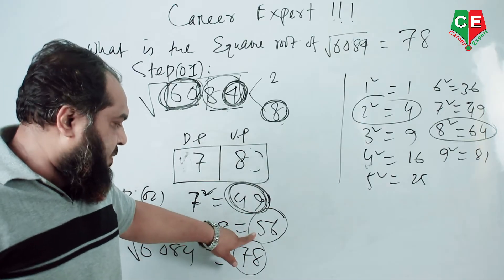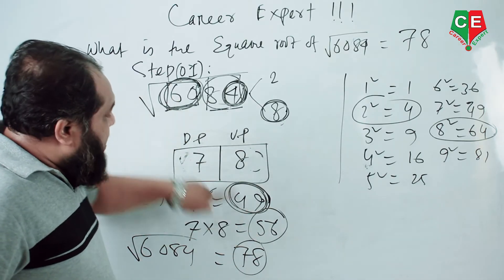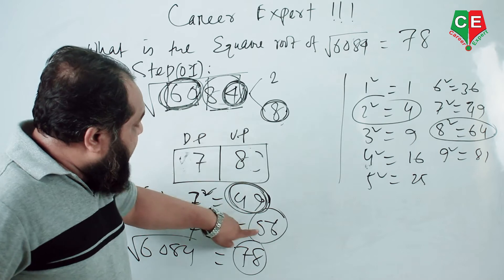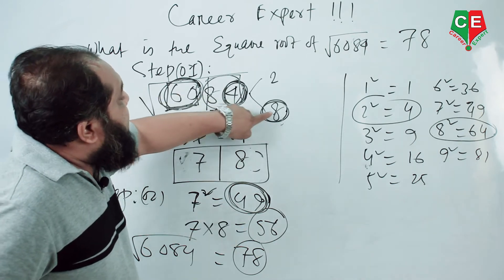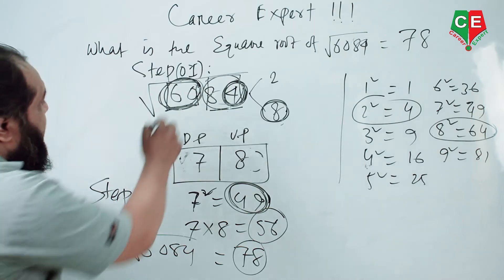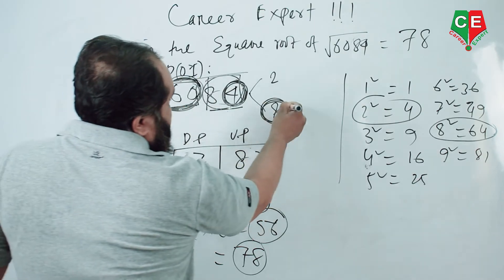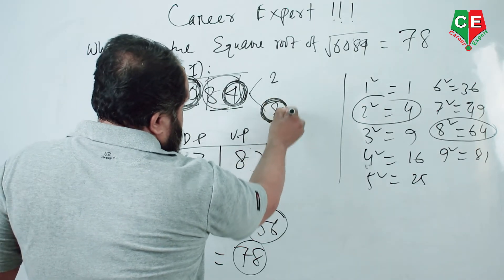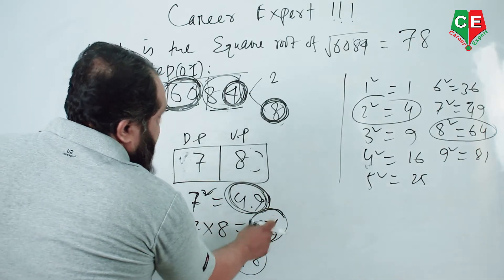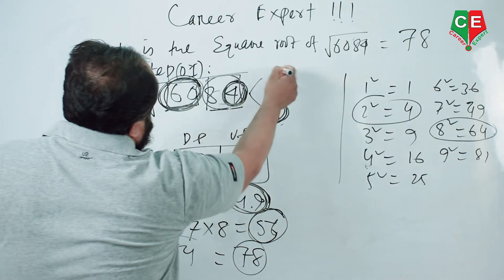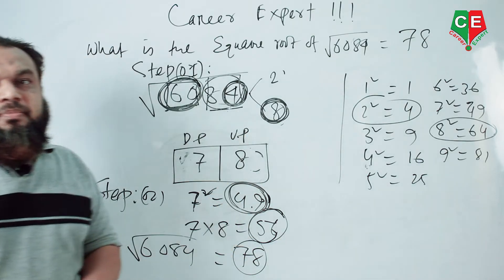Now check: 7 × 8 = 56. If this number is smaller than 60, we take the greater number, which is 8. If 60 were greater than that product, we take 8; if the product were greater than 60, we would take 2. So the answer is 78.